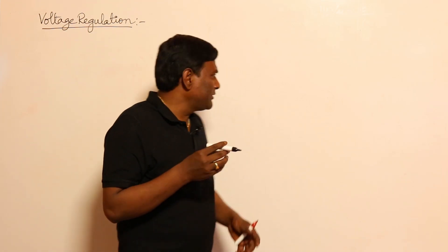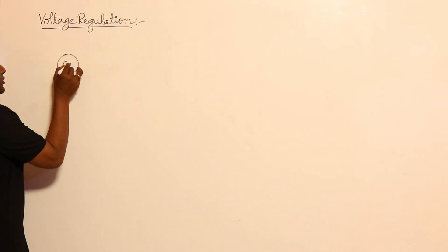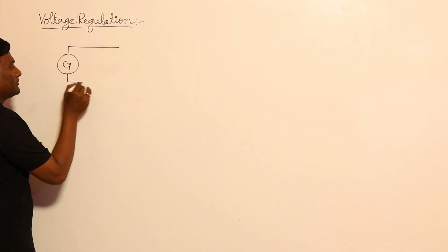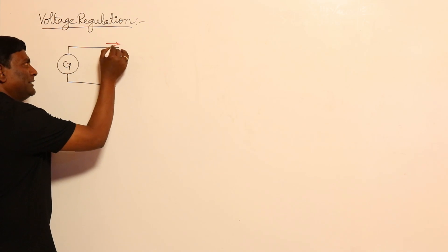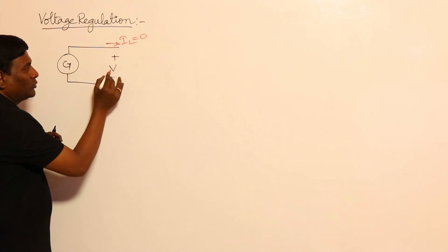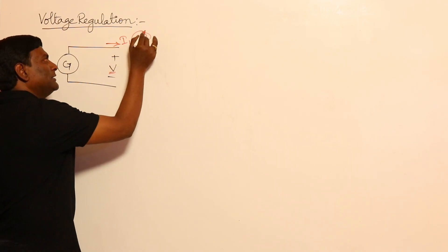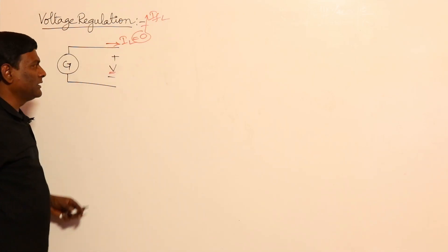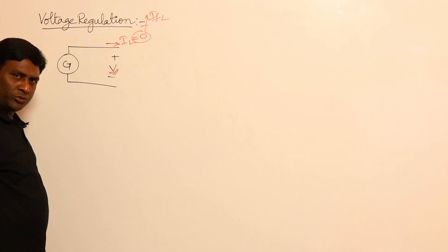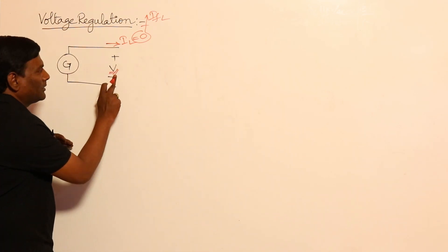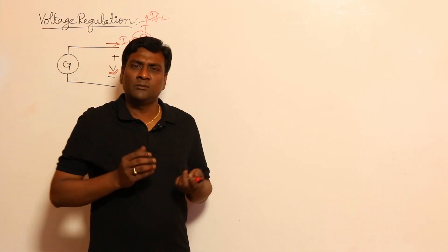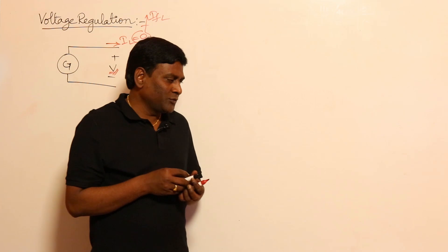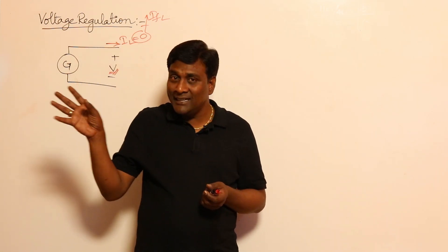In a simple way, consider a generator — it produces an output voltage. If the load current is zero, we get one voltage value. As load current increases to half load, full load, or anywhere in between, this output voltage varies. We need to know how this voltage varies — those external characteristics. The variation of voltage with load current is what we call voltage regulation.